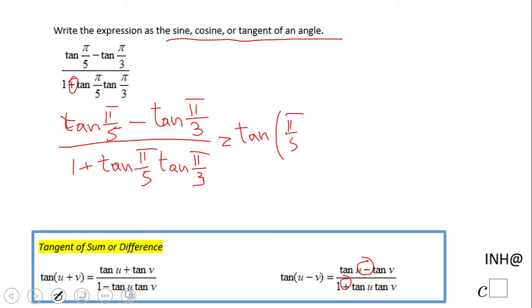We just have to add these two fractions. We're going to find a common denominator of fifteen. So we're gonna have three pi over fifteen minus five pi over fifteen.